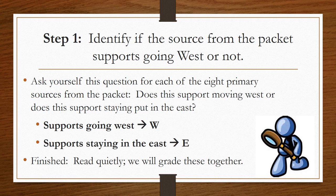If the source supports going west, put a W next to the number in your history notebook. If it supports staying east, put an E next to the number of the source in your history notebook. Keep in mind that the packet is a class set and should not be written on. All of your answers should be identified in your history notebook for further reference.